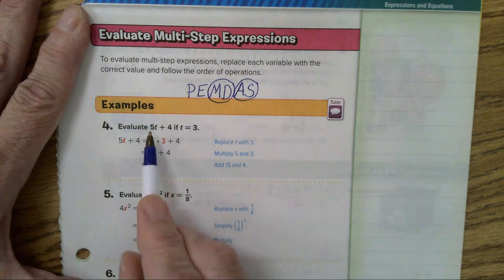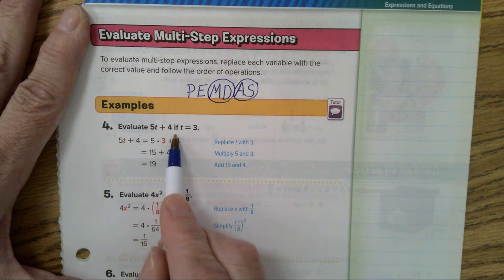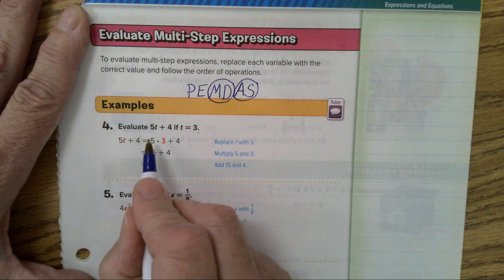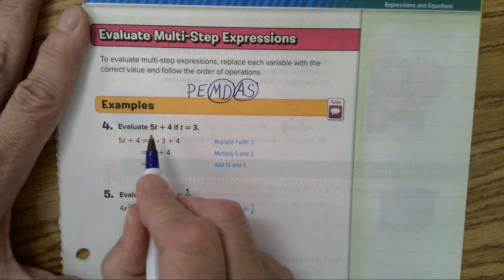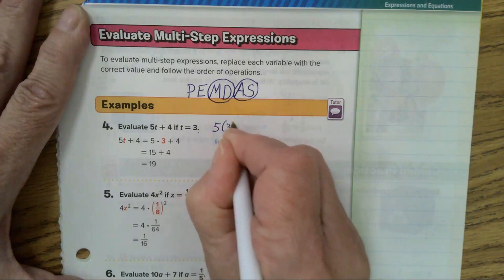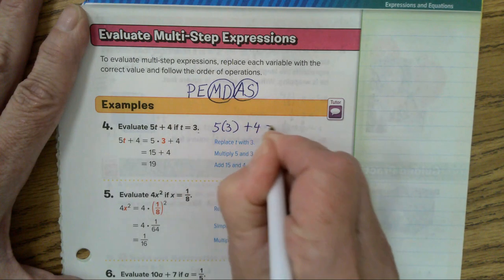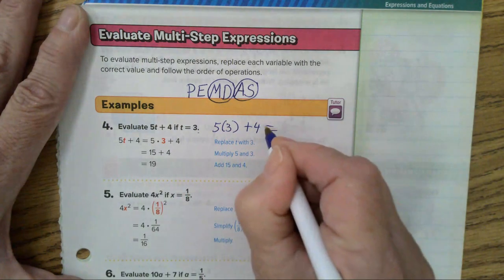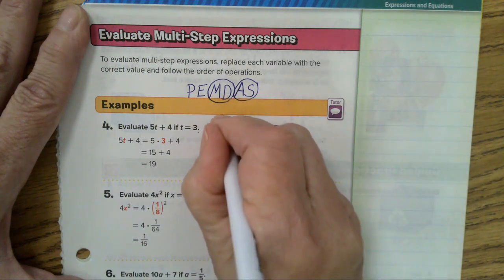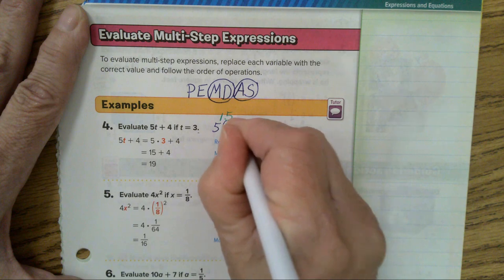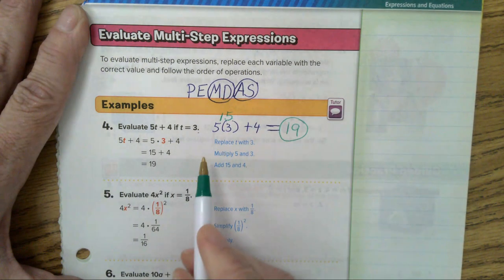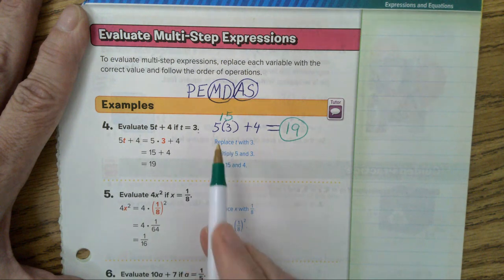So, this says 5 times T plus 4. If T equals 3. It is not, not, not 53. It's 5 times 3. So, 5 times 3 plus 4. 5 times 3 will give you 15. And 15 plus 4 is the answer 19. Please write it down like this. That's 5 times 3.